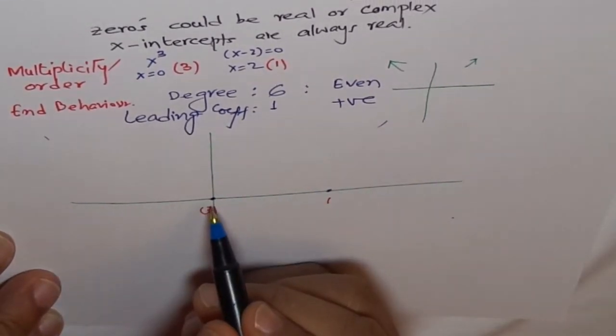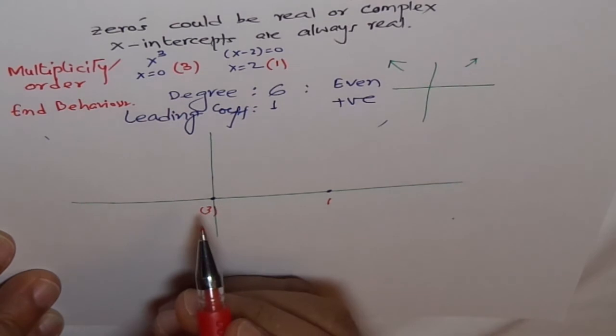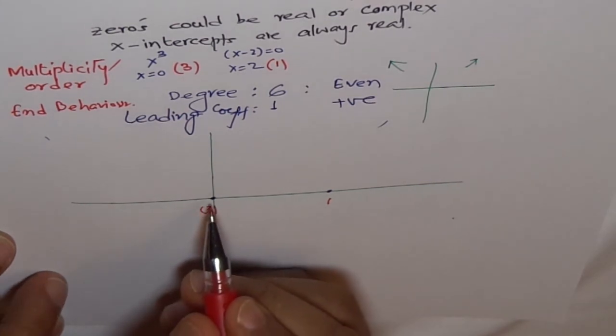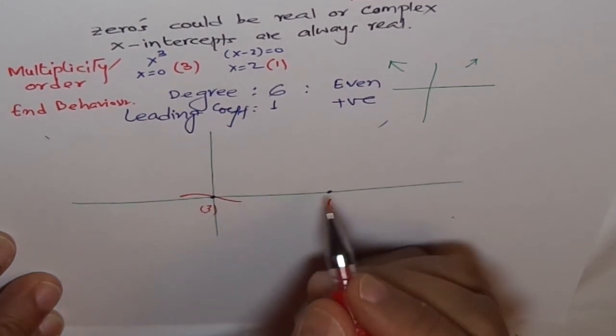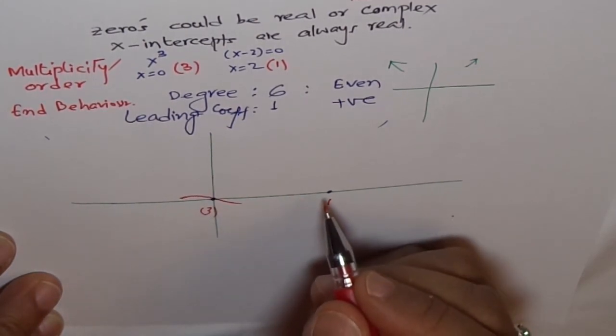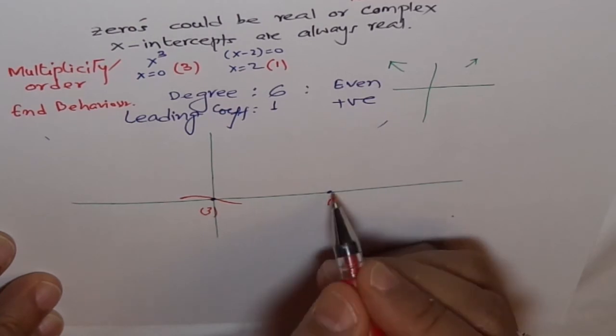Now, at this point, since the multiplicity is three, it will behave like a cubic function. So cubic function will be like this. And this will behave like a linear function. So linear function will be like this.